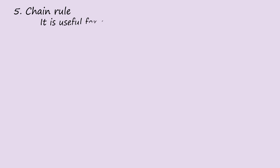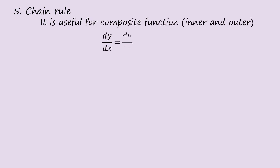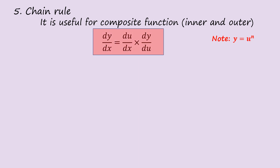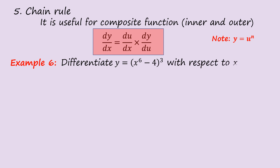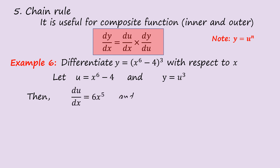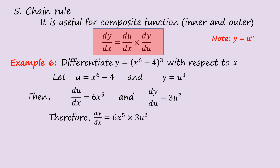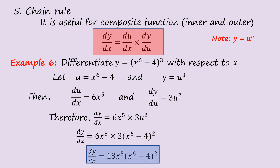Chain rule: it is useful for composite functions — inner and outer. The formula is dy/dx = (du/dx)·(dy/du), where y = u^n. Example 6: Differentiate y = (x⁶ − 4)³ with respect to x. Let u = x⁶ − 4, so y = u³. Then du/dx = 6x⁵ and dy/du = 3u². Substituting and replacing u, the answer is 18x⁵(x⁶ − 4)².